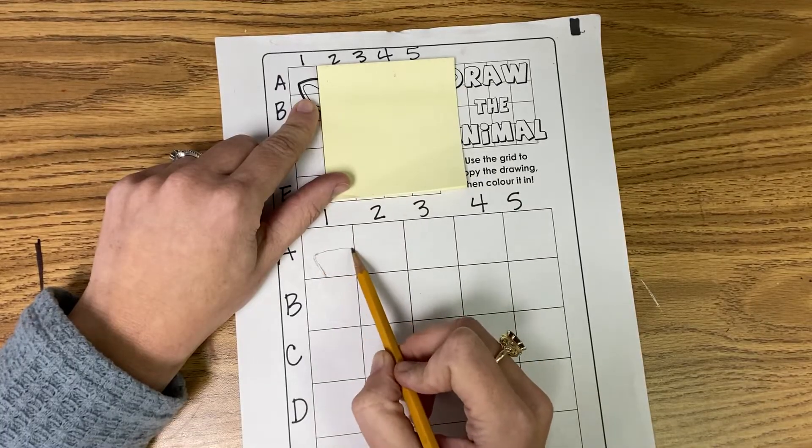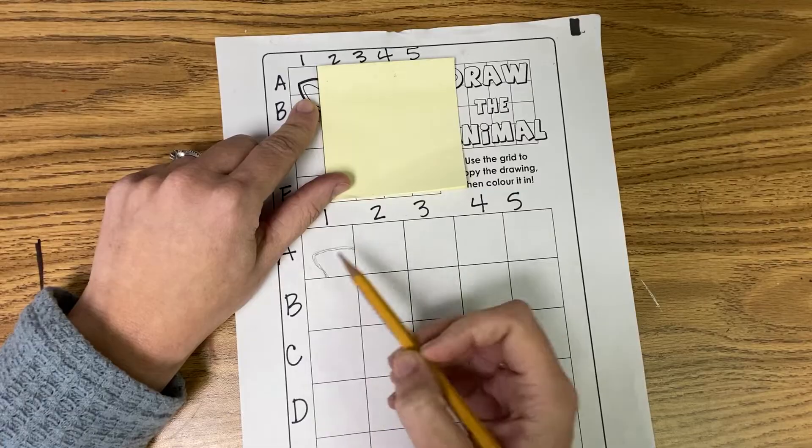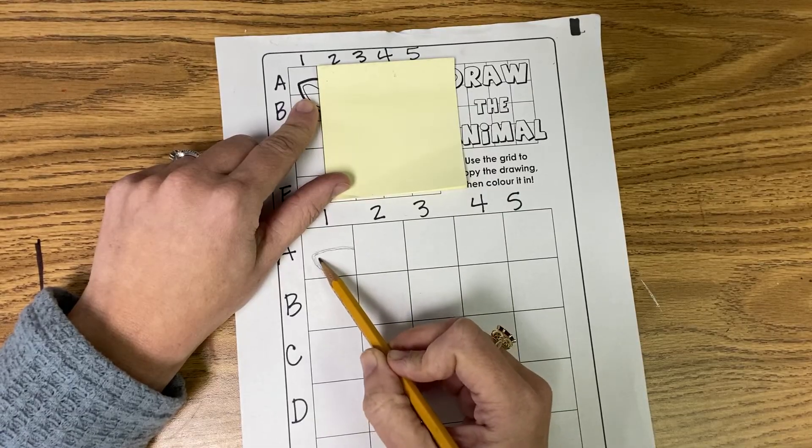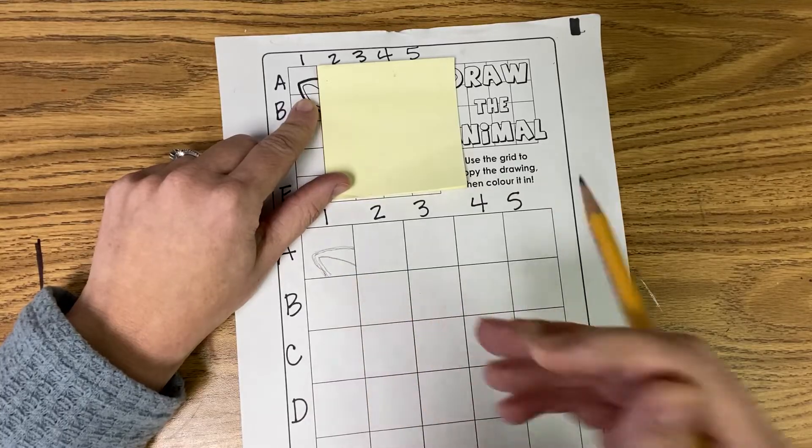This makes it easier for you to take one big picture and kind of break it down. So I'm using a pencil and I'm gonna go really light because I might have to erase some of these lines. Okay, and I only drew what was in A1.